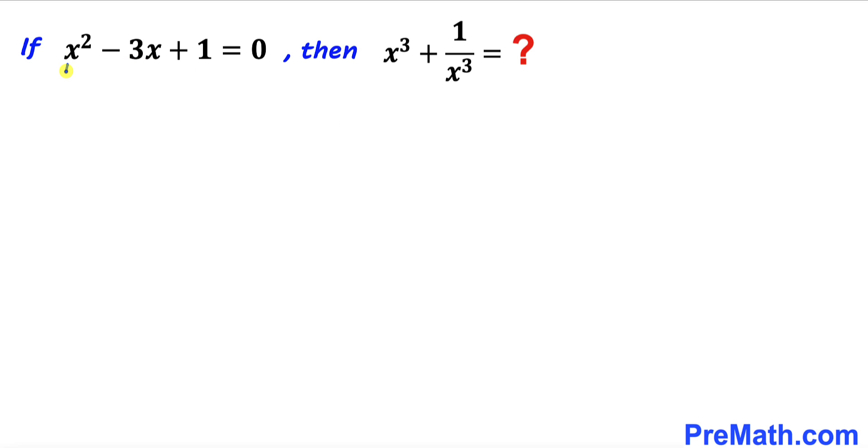I'm going to focus on this quadratic equation and here I have copied it down. Now let me go ahead and manipulate this equation by dividing by x across the board on both sides. x squared divided by x is going to give us x minus here this x and x is gone.